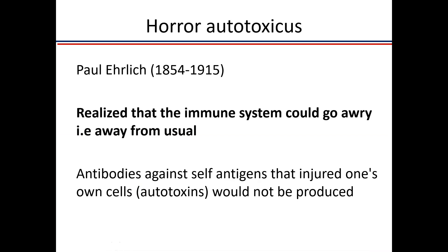The whole concept of autoimmunity actually came way back in the early 19th century. It was given by Paul Ehrlich, who realized that the immune system can sometimes go haywire — it can change, and you can get antibodies against your self-antigen. While everybody used to think that you cannot produce antibodies against your own self.